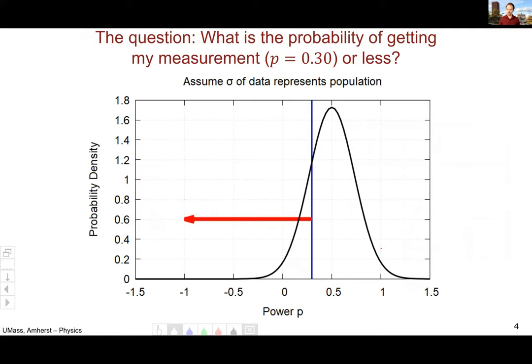So the question that I want to answer is, what's the probability of getting my measurement? I measured p to be 0.30. What's the probability of getting that power or less, given that we know the true value? So I want to know what's the probability of getting my value 0.30 or some value less than that.